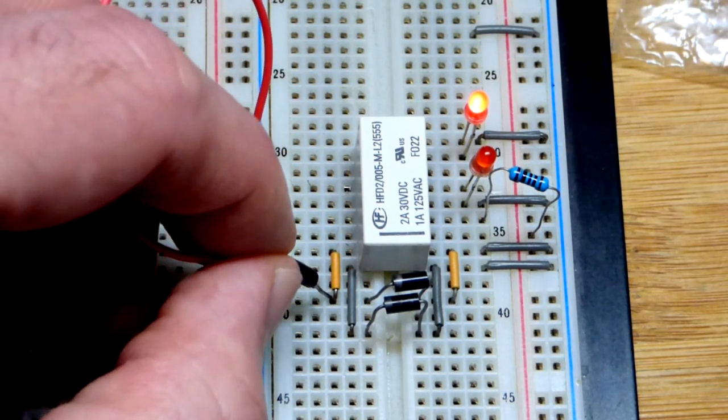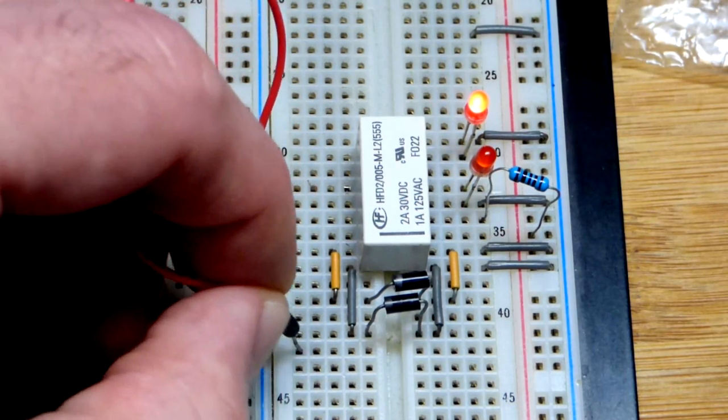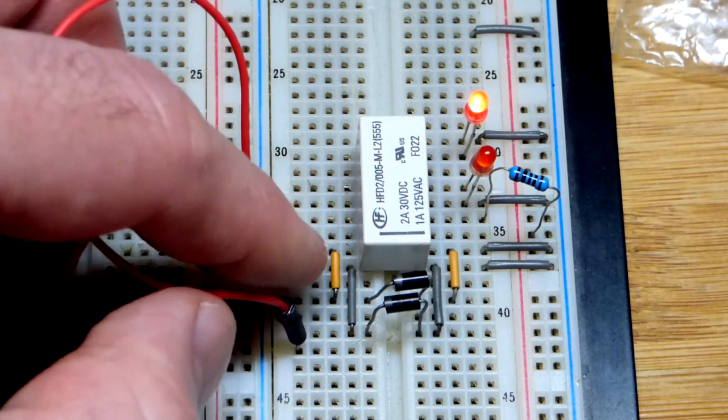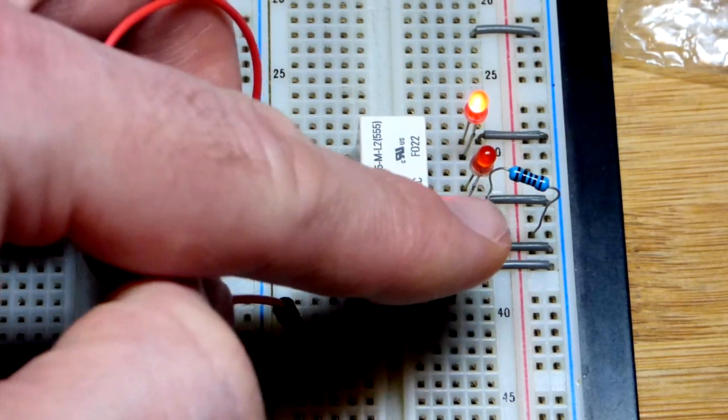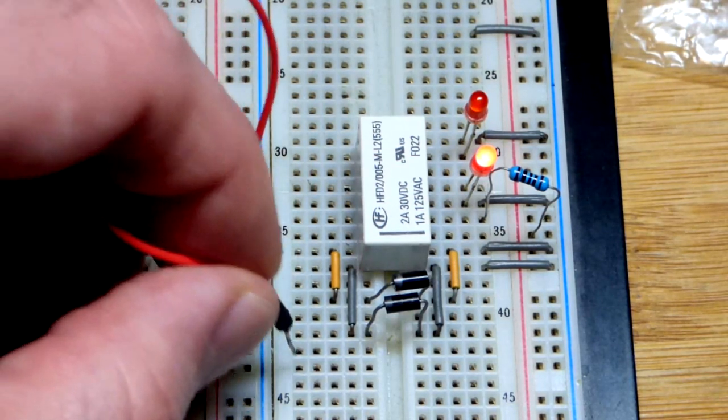And the rectifier diodes, both of them have their cathodes over towards the positive side here. When I make a connection to the jumper that goes to the rectifier diodes, the rectifier diodes prevent current from going through it when I'm applying power. The current is going through the coil.